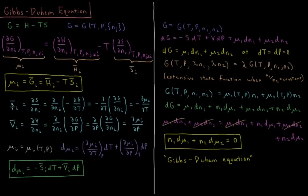If we look at the partial molar entropy, that's the derivative of entropy with respect to number of moles of substance i. We also know that the entropy is the negative partial derivative of the Gibbs energy with respect to temperature. So this is d/dN_i of (−dG/dT). Due to the equality of mixed partial derivatives, we can trade the order of operations, giving us −d/dT times (dG/dN_i), which equals the negative temperature derivative of the chemical potential. So the partial molar entropy of a substance equals the negative partial derivative of its chemical potential with respect to temperature.